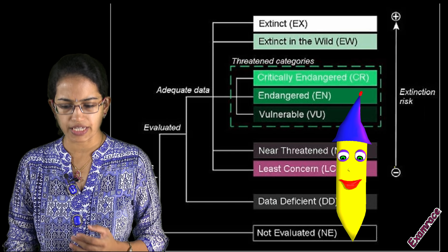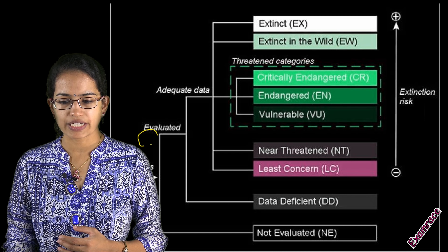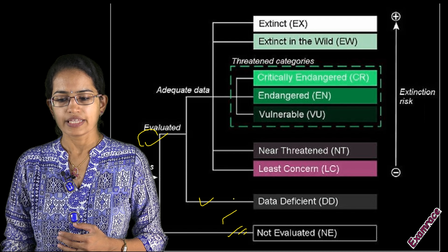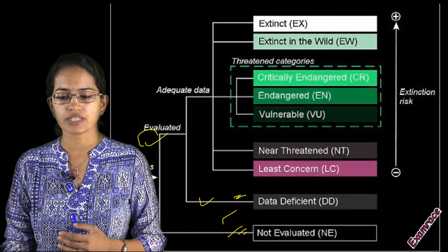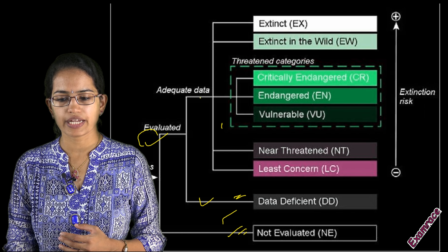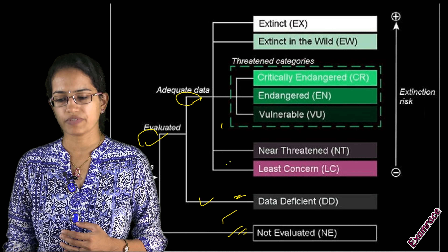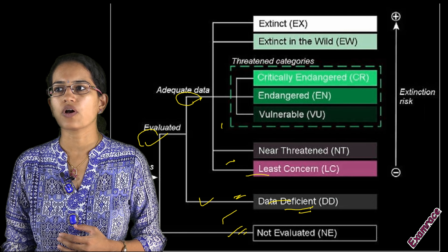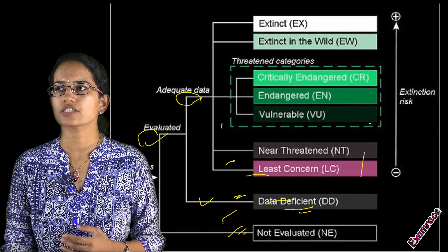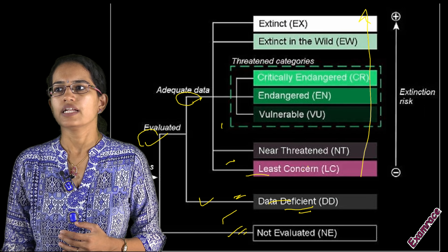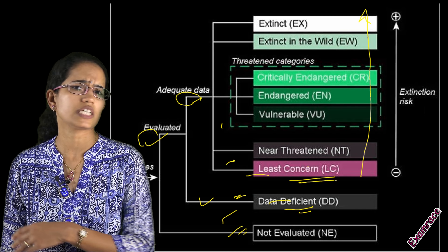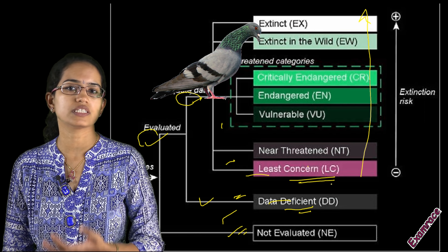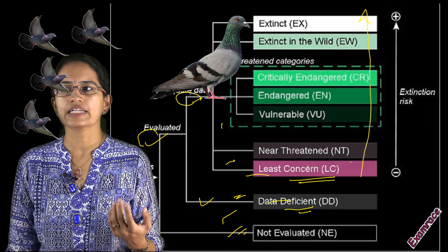This IUCN classification talks about evaluated species versus species that have not been evaluated, then species on which we have adequate data versus those that are data deficient. We talk about species based on their extinction rate. Least concern are those species which are abundantly available — for example, the pigeon. Near threatened are those on the verge of being threatened.